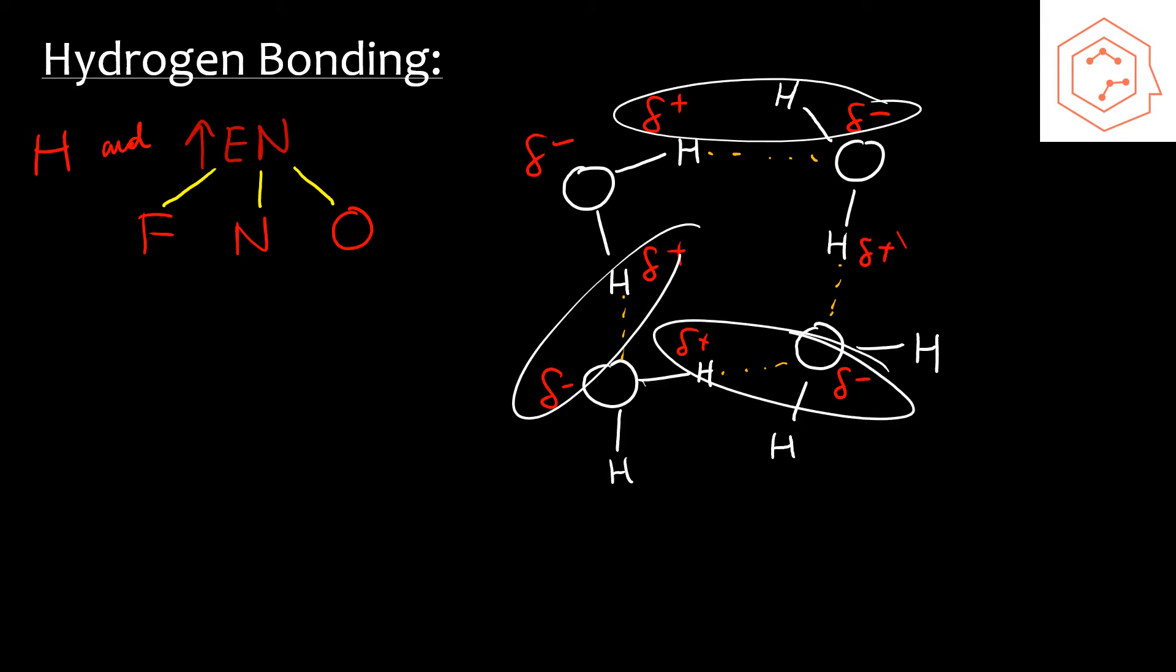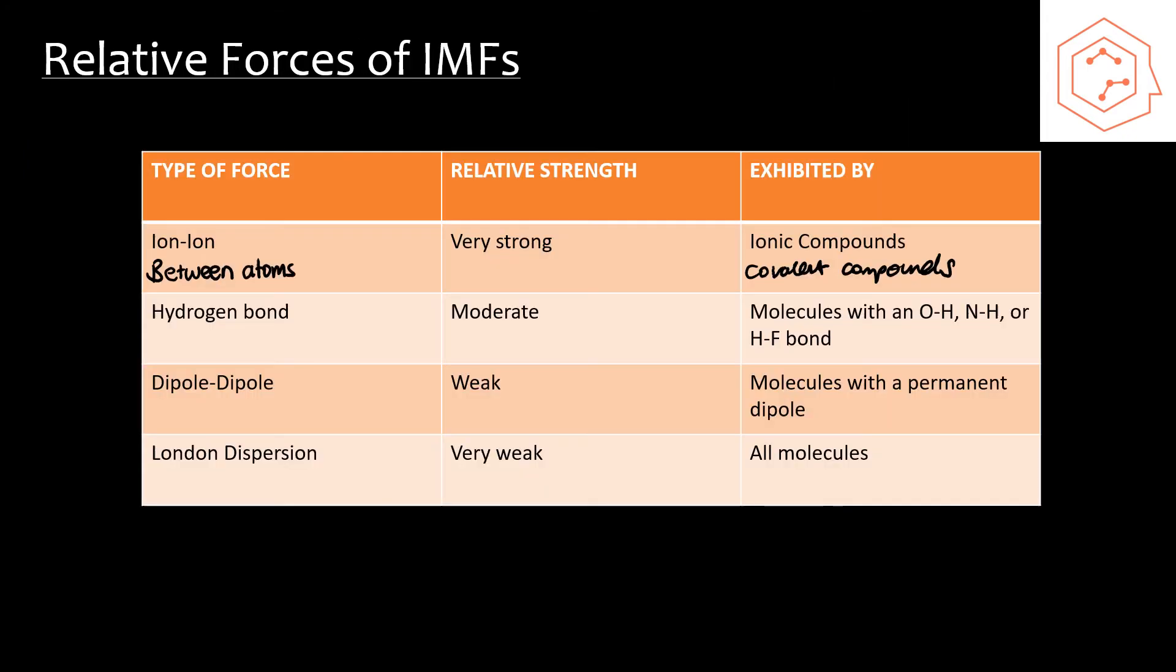Let's review a little bit. Ionic or covalent compounds are intramolecular forces, whereas hydrogen bonding, dipole-dipole, and London dispersion are intermolecular forces. Here you can see the relative strengths and specific examples.